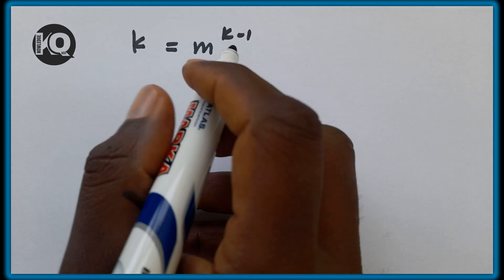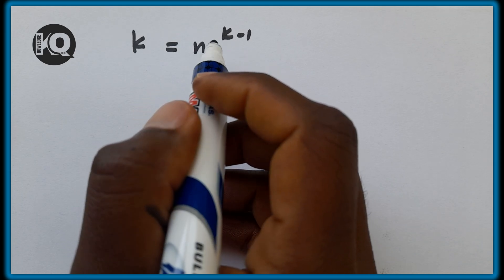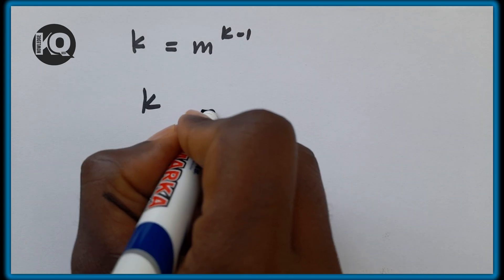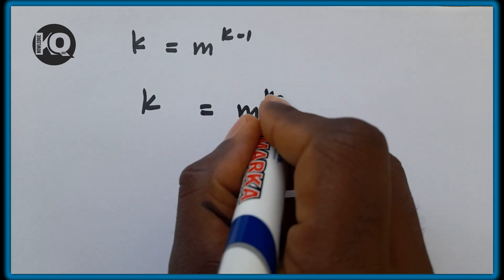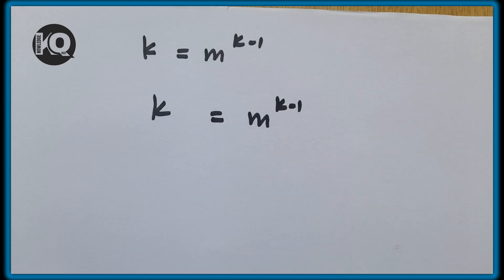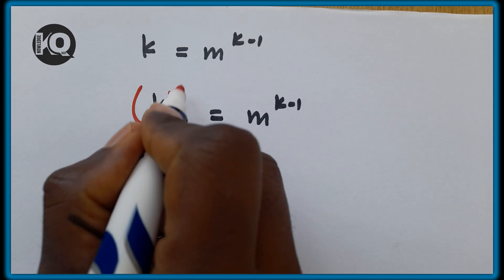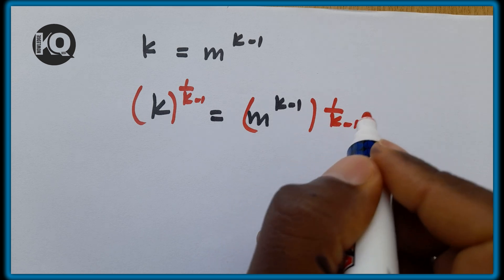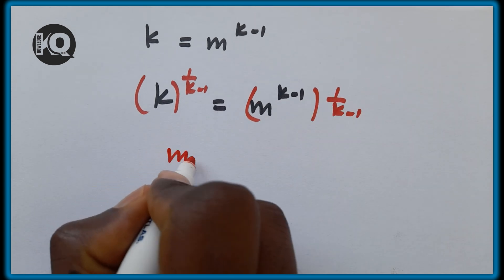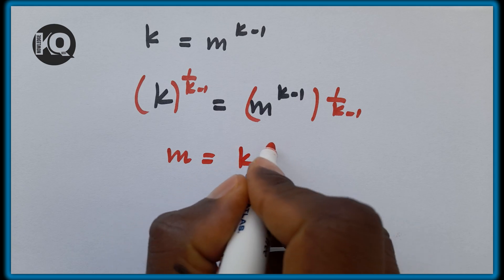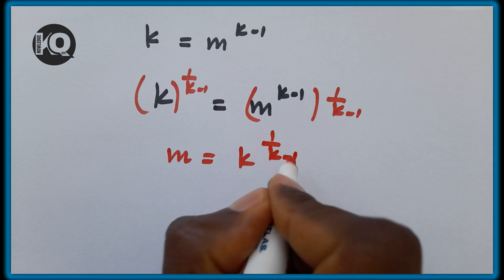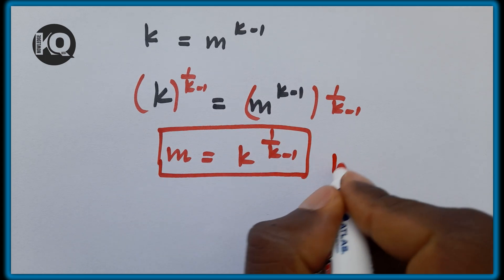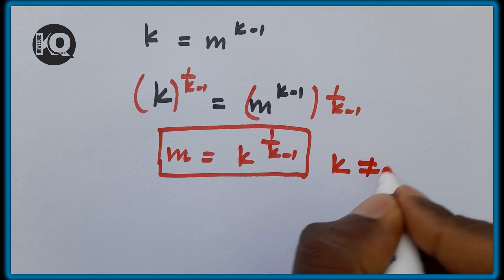We have k equals m to the power of (k − 1). Raising both sides to the power of 1/(k−1), m equals k to the power of 1/(k−1). Note that k must be different from 1.